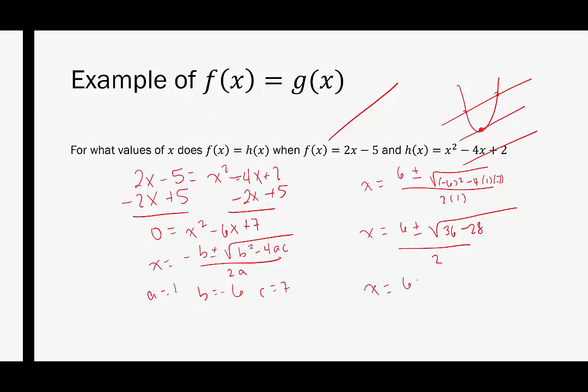So we get 36 minus 28 under the radical, the discriminant, over 2. So then we get x is equal to 6 plus or minus the square root of 8 over 2. We're going to simplify the square root of 8. That would end up being 2 radical 2. And now we can simplify all 3 of these. That would be 3 plus or minus the square root of 2. So this one did have two zeros, or not two zeros, sorry, two points of intersection. One, so we're going to say one is when x is equal to 3 minus radical 2, and the other is when 3 plus radical 2. So two solutions here.